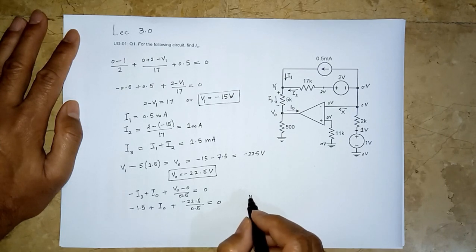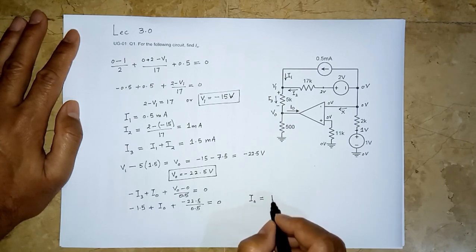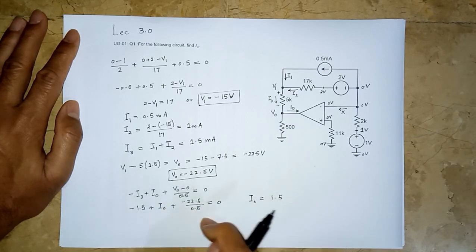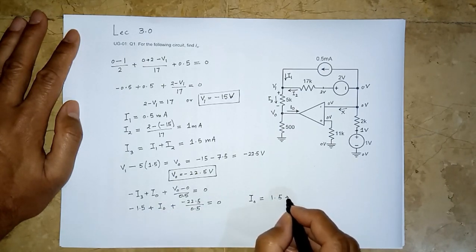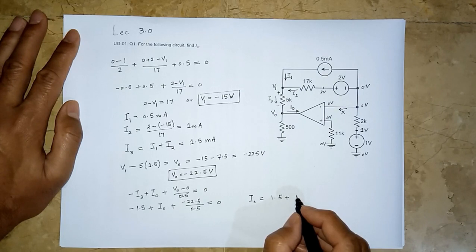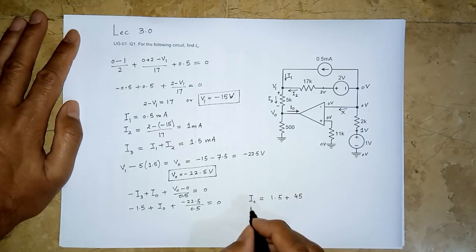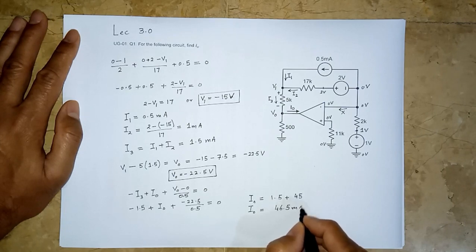Which gives i_o equal to 1.5—and this goes to the other side—and plus 22.5. The double of that, actually, is 45. And we get i_o is equal to 46.5 milliampere.